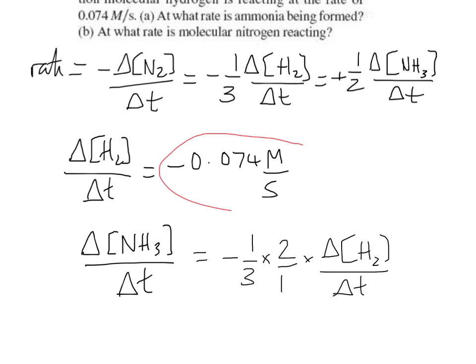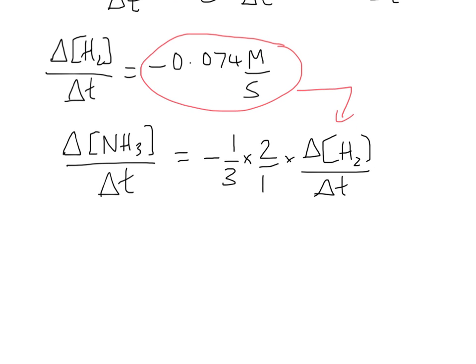We already have this, so we can just multiply everything together. At this point, we've got minus 2 thirds times by minus 0.074, and if we do the math, that comes out to be positive 0.049 molarity per second.